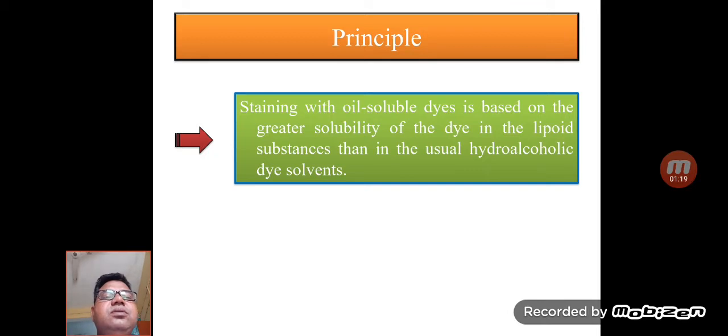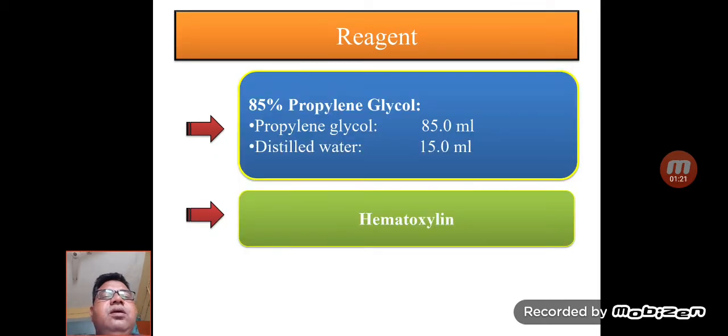For the reagents, 85% propylene glycol is used, prepared by taking 85 ml propylene glycol and 15 ml distilled water. This is how 85% propylene glycol is prepared.